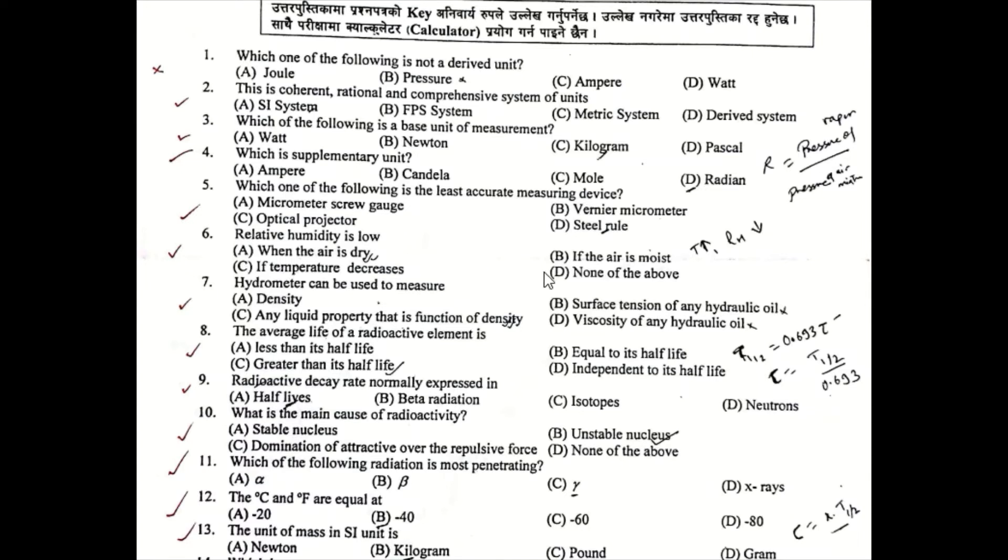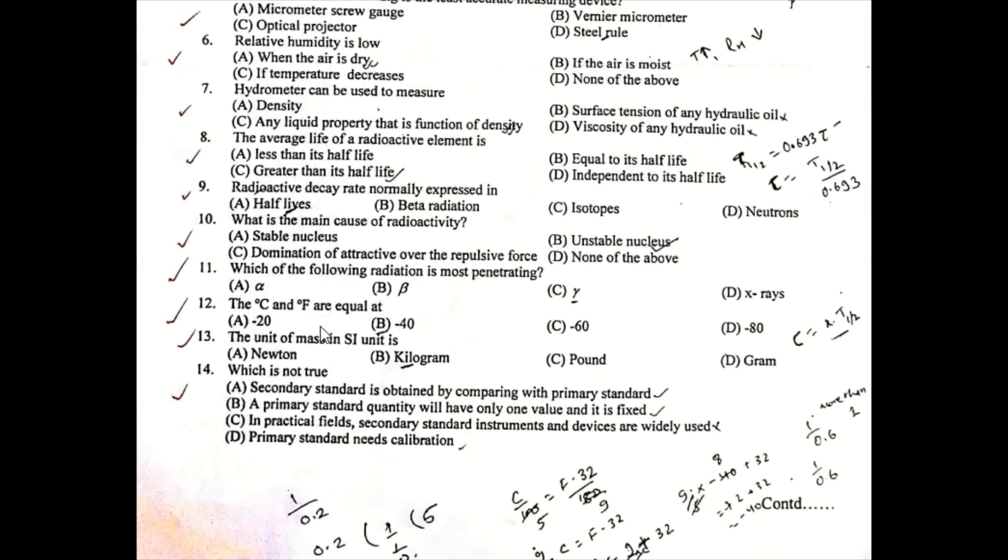Options include: if the air is moist, if the temperature decreases, or none of the above. Question Number 7: Hydrometer can be used to measure density or any liquid property that is a function of density, surface tension of any hydraulic oil, or viscosity of any hydraulic oil. Question Number 8: The average life of a radioactive element is less than its half life, equal to its half life, greater than its half life, or independent of its half life.